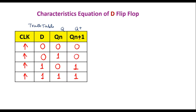Now let us consider the D flip-flop. Qn+1 is the next state of the flip-flop. If D=0 and present state is 0, next state is 0. If D=0 and present state is 1, next state is 0. If D=1 and present state is 0, next state is 1. If D=1 and present state is 1, next state is 1. We observe that Qn+1 simply follows the D input, so Qn+1 = D. We will verify this by simplifying with a K-map.